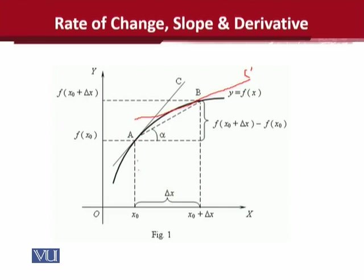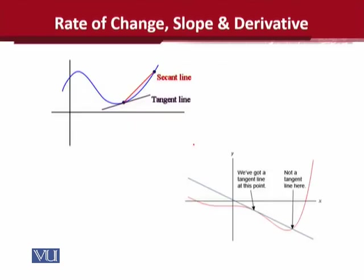ہم نے point A کو choose کیا اور اس میں increments کو introduce کیا — delta x ایک change introduce کی — اور اس کے نتیجے میں y-axis میں جو changes آتی ہیں ان کو دیکھیں گے۔ ان کی ratio کو calculate کر کے derivative calculate کر سکتے ہیں۔ Graphical notation نے ہمیں یہ idea دیا کہ graphically derivative basically slope کو show کر رہا ہے۔ اس case میں tangent کو explain کیا گیا ہے — اگر line curve کو کاٹ رہی ہو تو وہ tangent نہیں ہوتی، اس case میں دو جگہ پہ کاٹ رہی ہے اس لیے اسے secant line کہیں گے۔